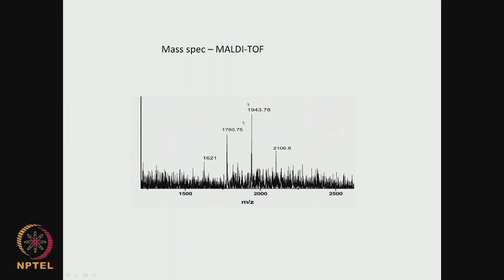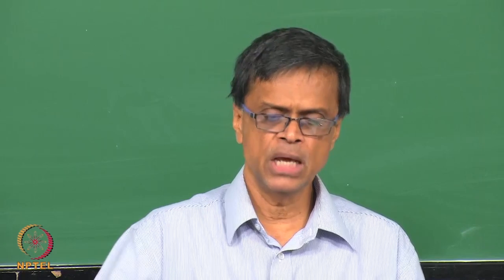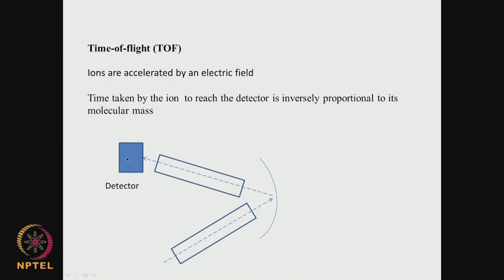In time of flight (TOF), the ions are accelerated and travel to the detector. The time these ions take to reach the detector is inversely proportional to their molecular mass. A very large, massive ion will take much longer to reach the detector, while a small mass ion will travel faster. From the time, we get an inverse relationship for the mass, and that is how the molecular weight is detected.